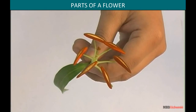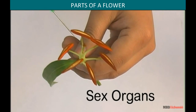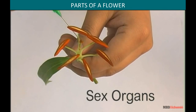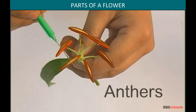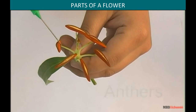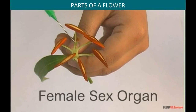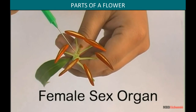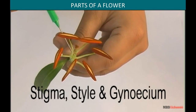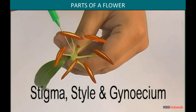This is the most important part of the flower, that is the sex organs. These are the anthers, which are the male sex organs. This is the female sex organ, that is the stigma, style, and the gynoecium.